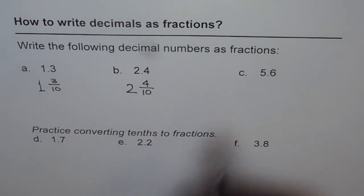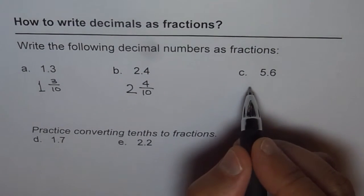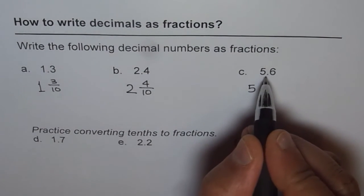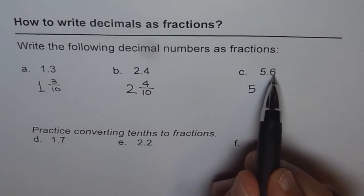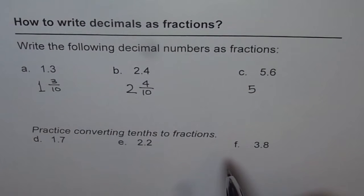And how about 5.6? 5 whole, right? Anything to the left of decimal is a whole number. And anything to the right of decimal number is actually a fraction part. 0.6 is 6 tenths.